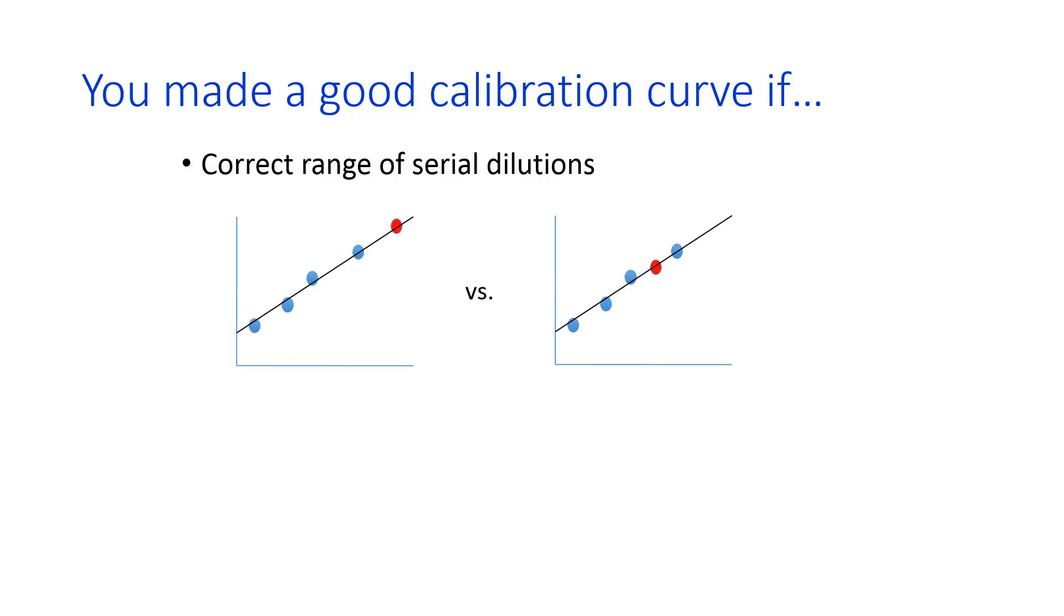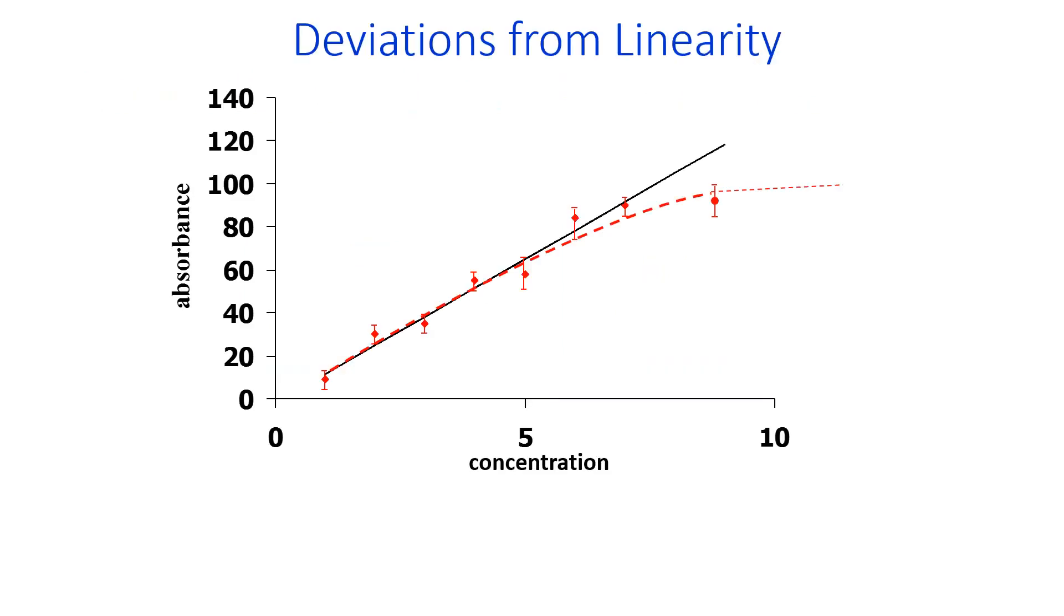And the reason is that you want to have at least one calibration point that is higher in concentration than your unknown. You also want to make your serial dilutions with the same contaminants as the sample, if possible, so that you can make sure that none of the contaminants in the sample are contributing to the signal and therefore giving you an artificially high concentration. Going along with that, you want to use constant analytical conditions, so same instrument parameters, same kinds of glassware, all that stuff.